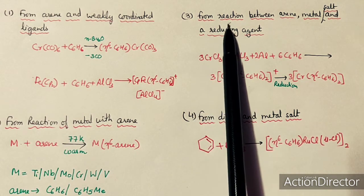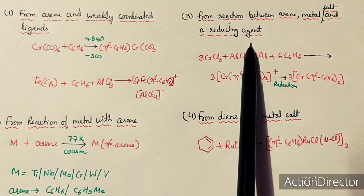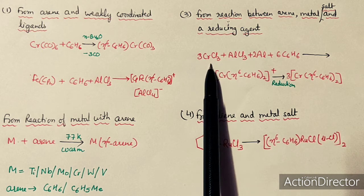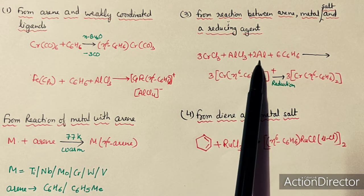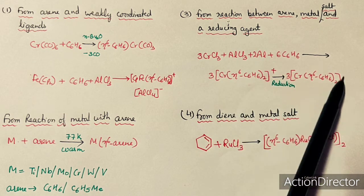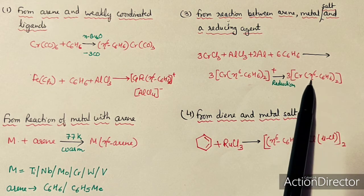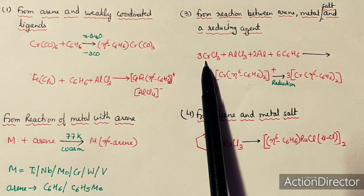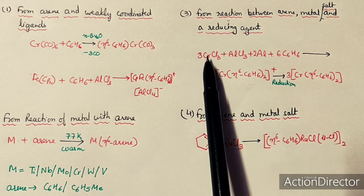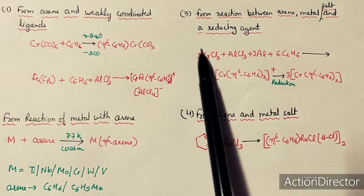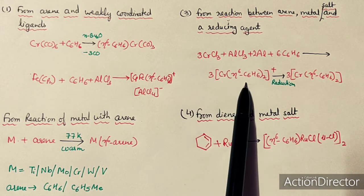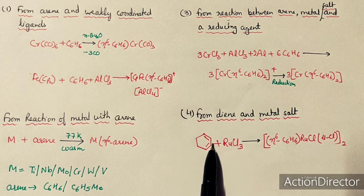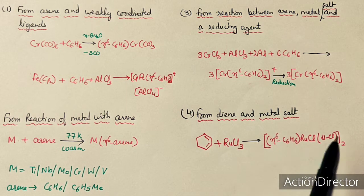A third method involves reaction between an arene, metal salt, and a reducing agent to generate eta-6 metal arene complexes. The salt may be a chlorohalide; aluminium acts as the reducing agent. Since chromium is in its +3 oxidation state in the salt, aluminium reduces the metal so it can react with arene. The fourth general method uses diene, which can react directly with a metal salt to form arene complexes.